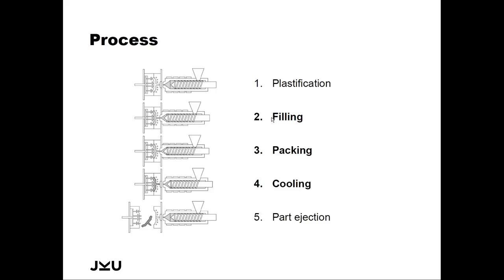In the first stage — the filling stage — the screw makes an axial movement without rotation in the direction of the mold, injecting the polymer into the mold. Once the mold is more or less filled, it is common practice to switch from a constant velocity condition during filling to a constant pressure or constant force during the packing phase, to fill the last pockets of the mold and pack additional material in. Once at least the gate is frozen and nothing more can be packed, you switch off the pressure, cool down your part, and eject it.